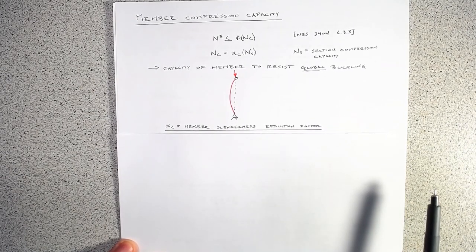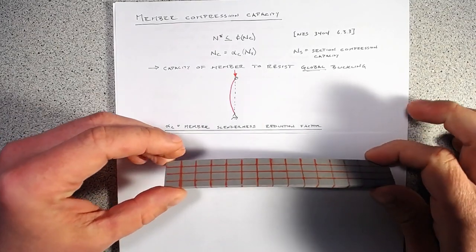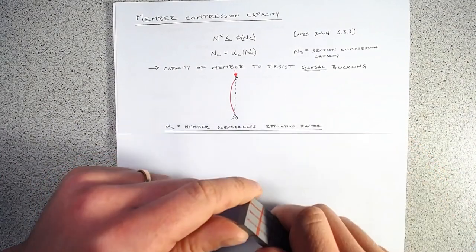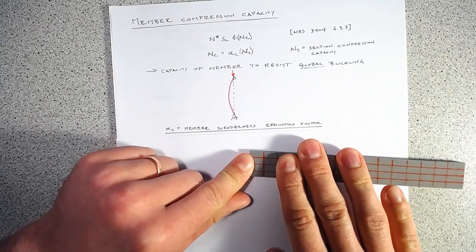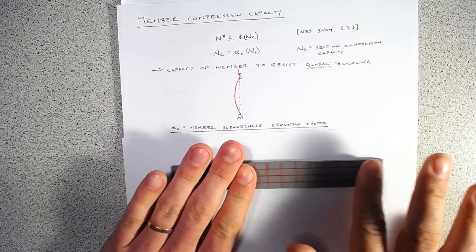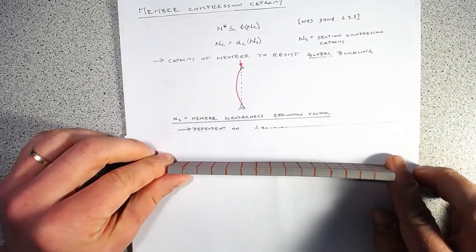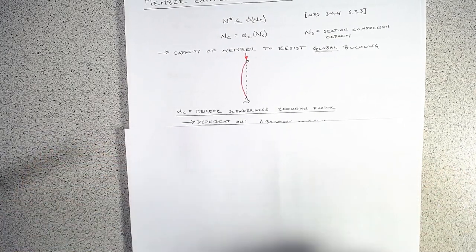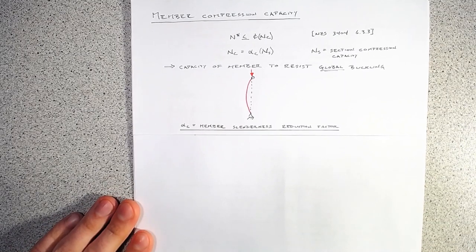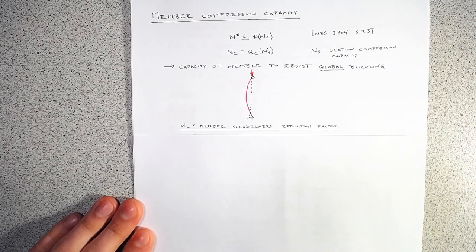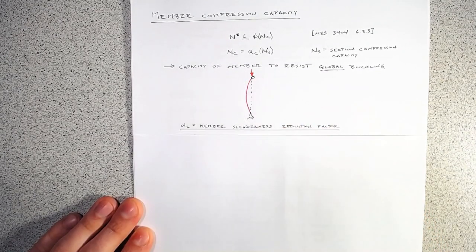A quick thought experiment: if we have a very short column, it's unlikely to buckle — it just squashes. You can see that with a short foam section. The more slender we go, the more the member wants to buckle. We want alpha_c to be as close to one as possible, because that means we can take full advantage of our section capacity.